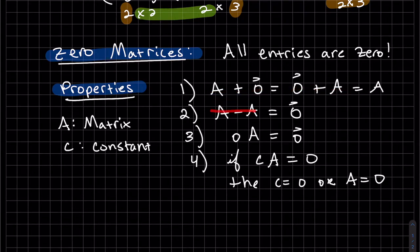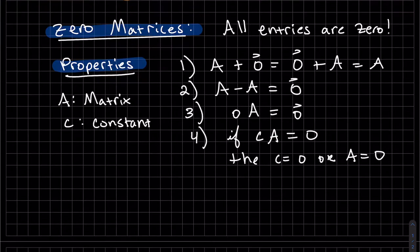You can subtract the same matrix, you'll get the zero matrix, same size. The zero constant times A is the zero matrix. Constant times A equals zero - if that's true, then one of them has to be zero. Be careful though. If two matrices are equal to zero, one of them doesn't have to be all zero.